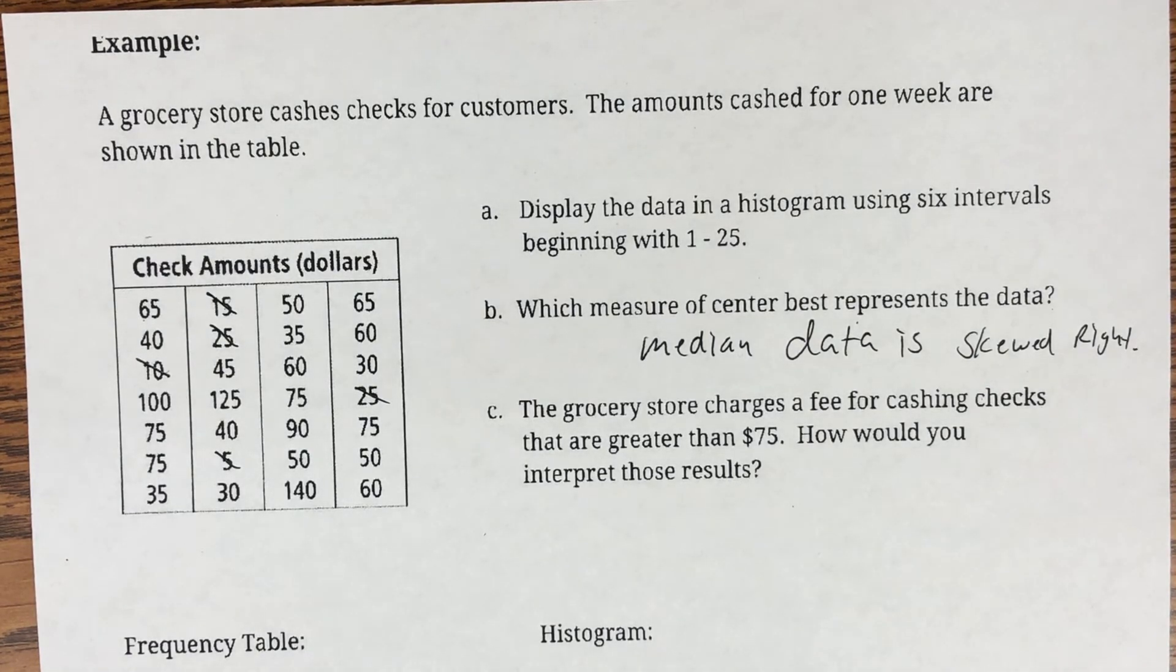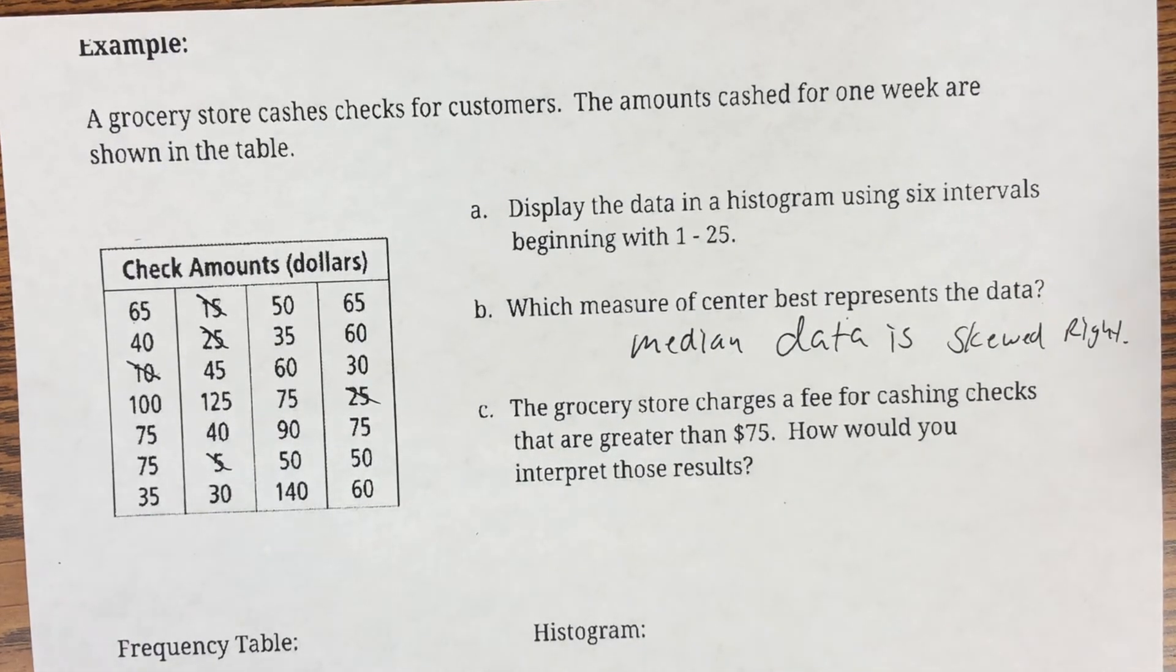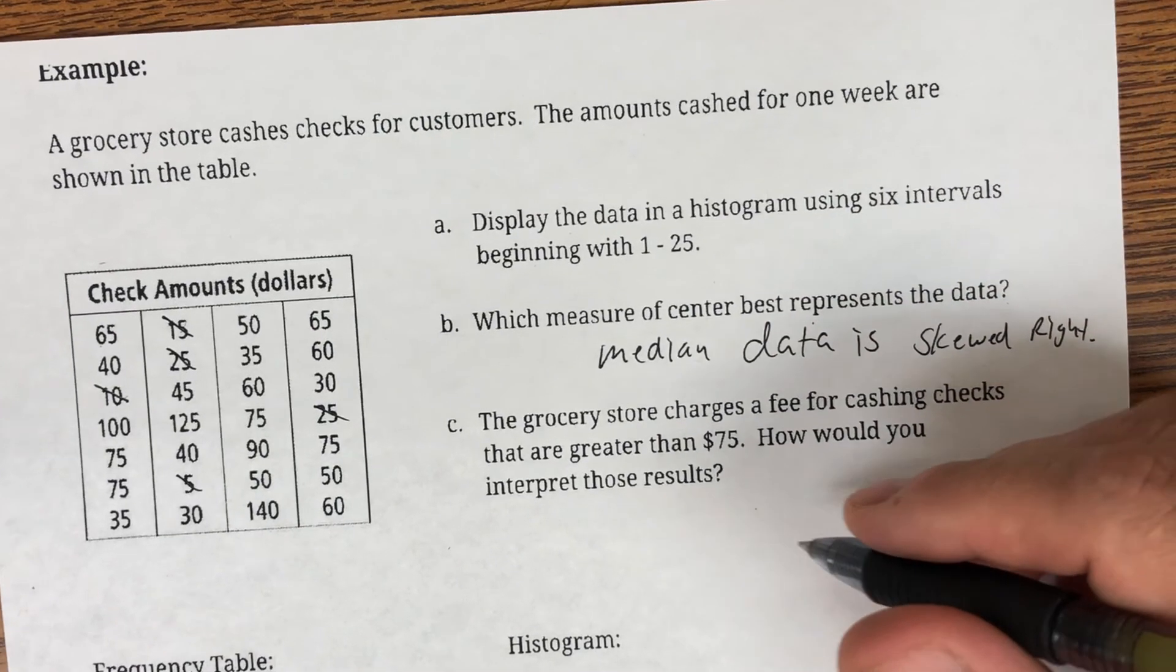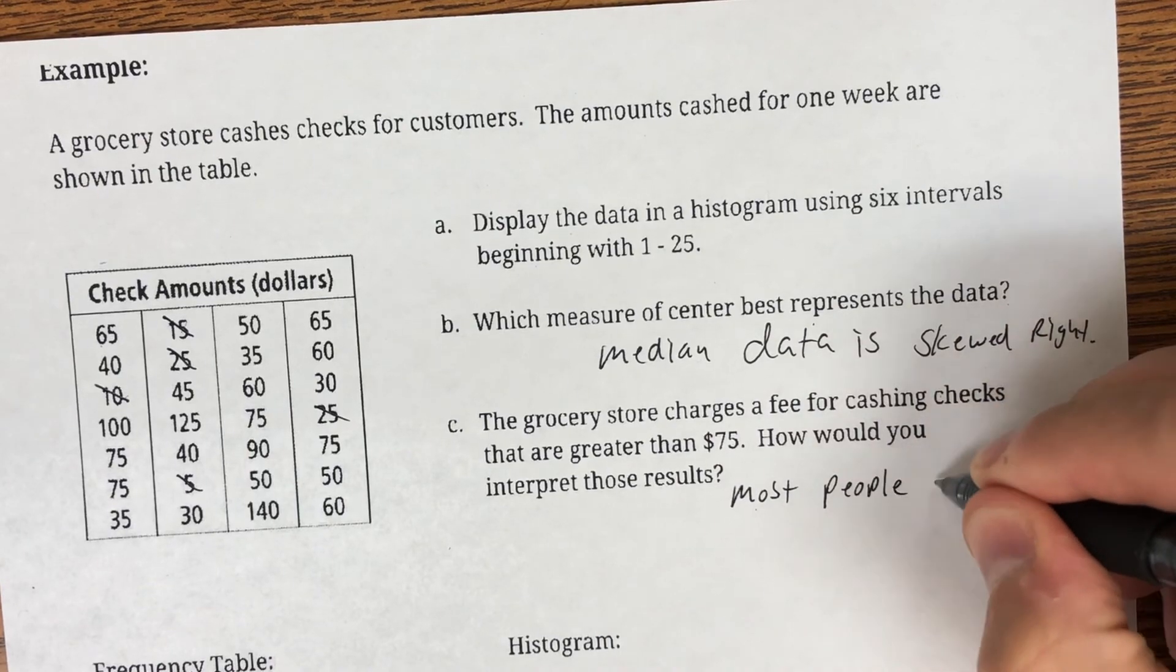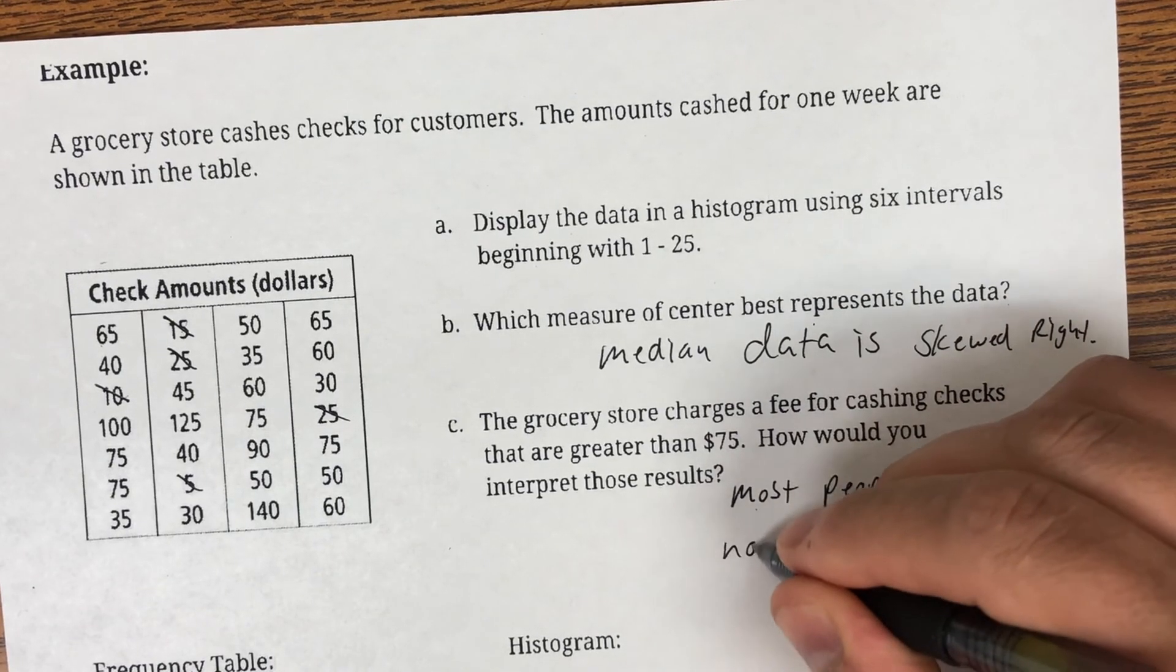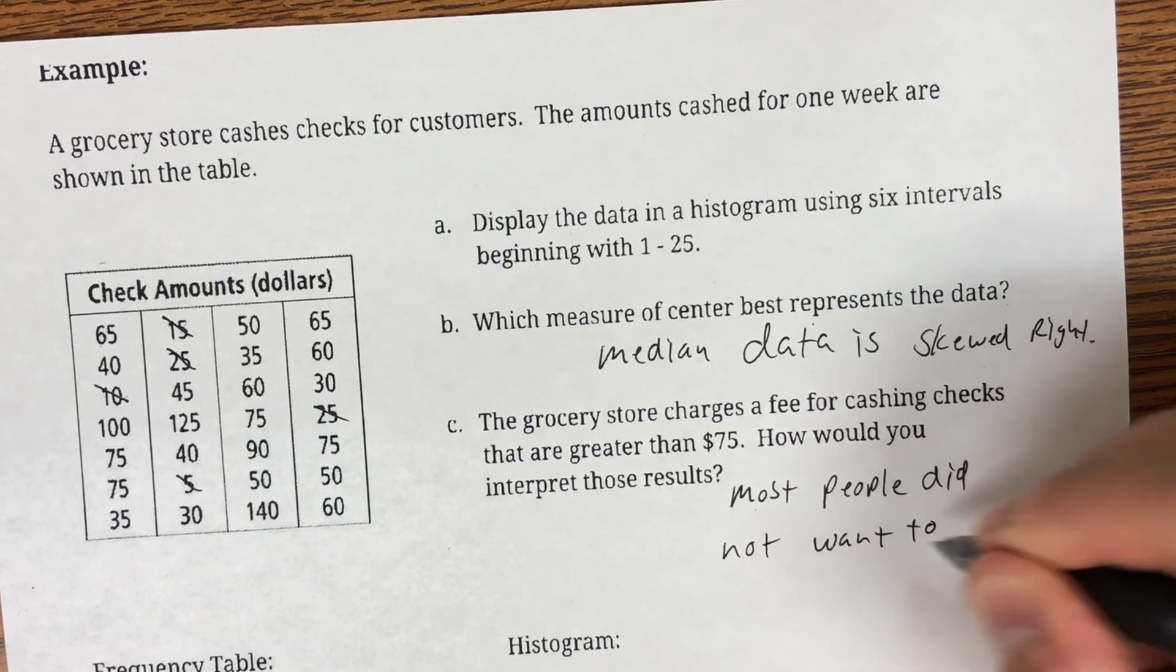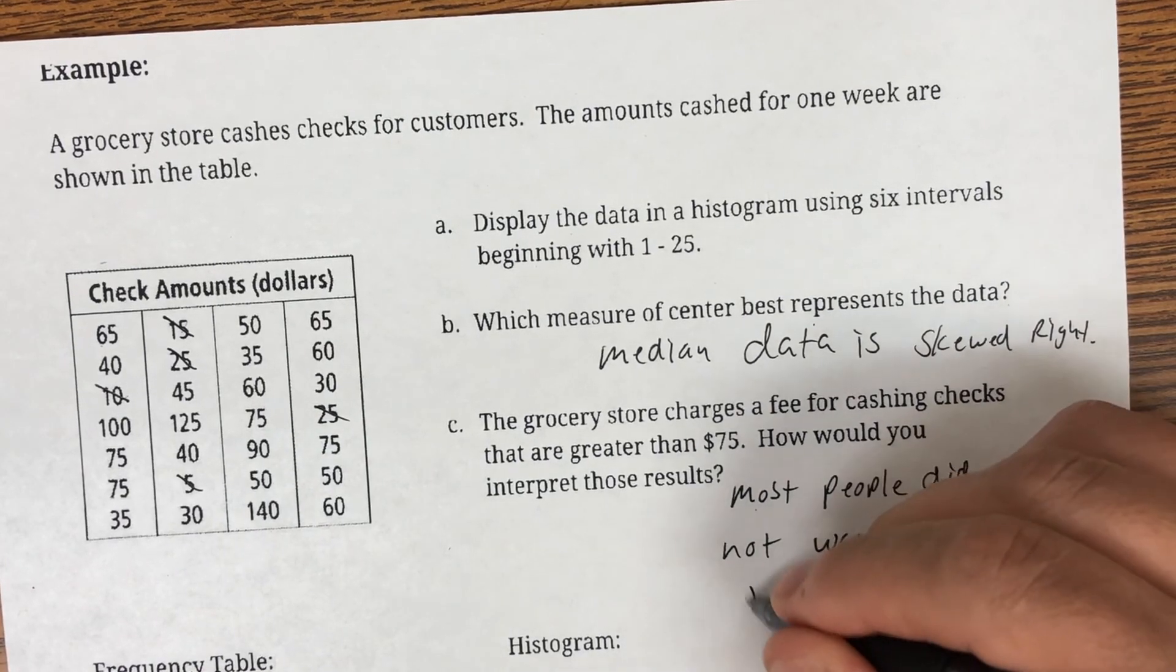And lastly, it says the grocery store charges a fee for cashing checks that are greater than $75. How would you interpret those results? Well, I would say that not many people cashed a check over $75. So, they didn't want to pay a fee. It might be a possibility. Or, the other possibility is if they had a huge check, they probably just went to the bank. But, I'm going to guess most customers didn't want to pay the fee.